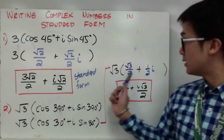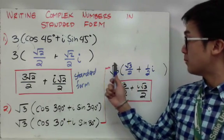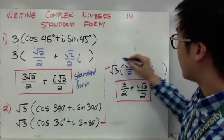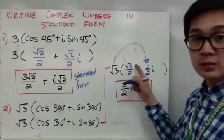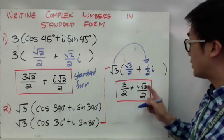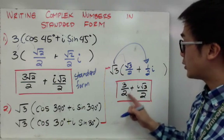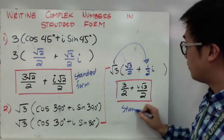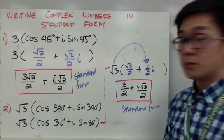Cosine 30° is √3/2 and sine 30° is 1/2. By distributing √3 to both terms, we get √3 × √3/2, which gives 3/2, and √3 × 1/2, which gives √3/2. Therefore, the standard form is 3/2 + i·√3/2.